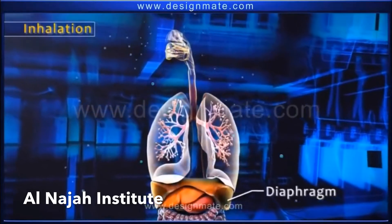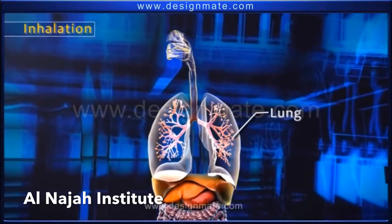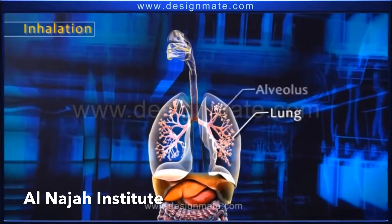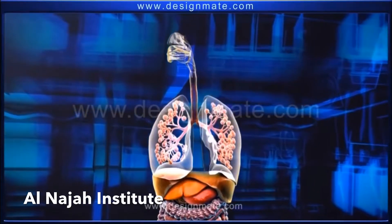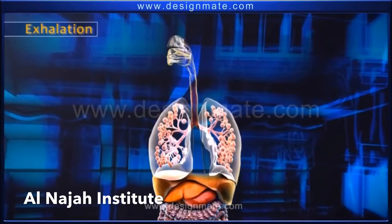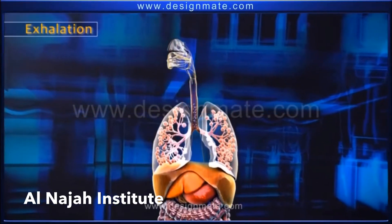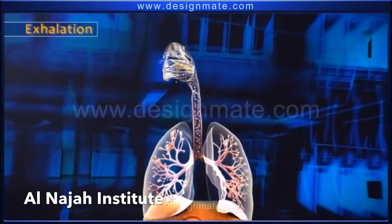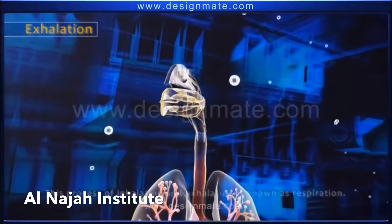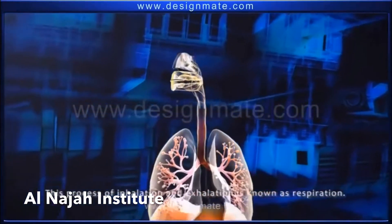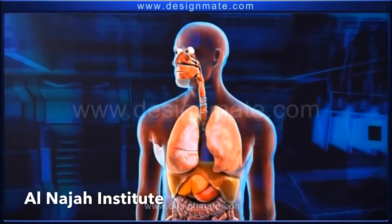The process of breathing in air rich in oxygen is called inhalation. After the contraction of the muscular diaphragm, the lungs expand and air rushes in, resulting in the inflation of the alveoli. During exhalation, the diaphragm moves up and the lungs contract, causing the alveoli to deflate and air to be forced out. This exhaled air is rich in carbon dioxide.